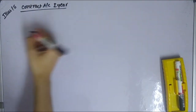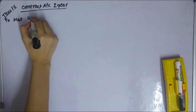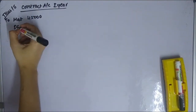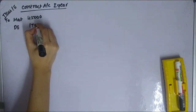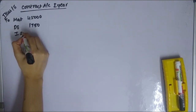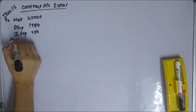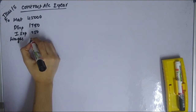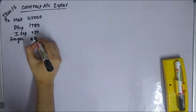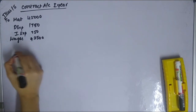On the debit side, we enter the expenses. Materials are Rs. 45,000. Direct expenses Rs. 1,750. Indirect expenses Rs. 1,750. Wages Rs. 42,500. Plant is Rs. 5,000.